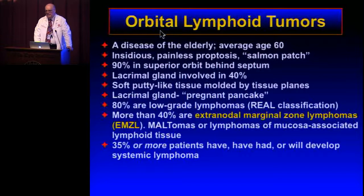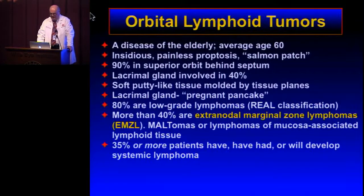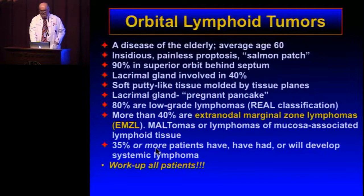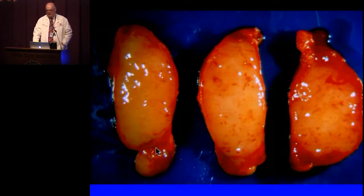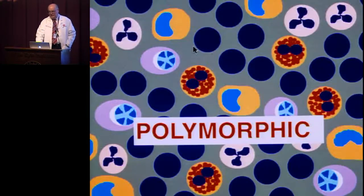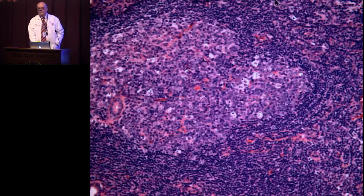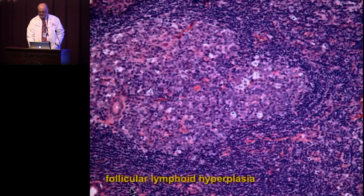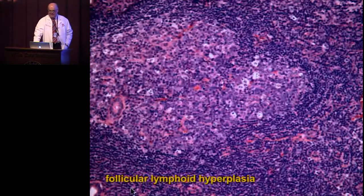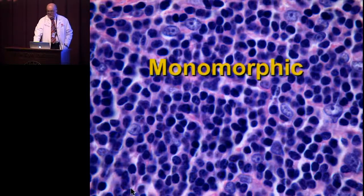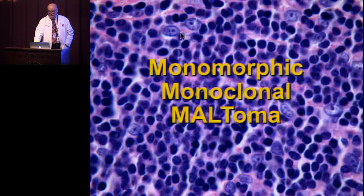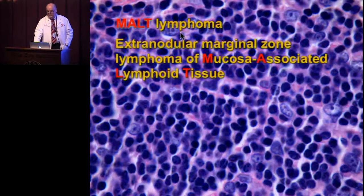The association of systemic disease with orbital lymphoma is higher than with conjunctival disease — a little more than a third of patients had systemic disease at some time. The patient should be worked up. The cut surface of the tumor has a very characteristic fish-flesh appearance. This is a monomorphic infiltrate, in contrast to the polymorphic infiltrate with lots of different cell types. Follicular lymphoid hyperplasia shows a germinal center with tingible body macrophages. The monoclonal MALT lymphoma — 3 M's: monomorphic, monoclonal MALT lymphoma — extranodal marginal zone lymphoma of mucosa-associated lymphoid tissue.